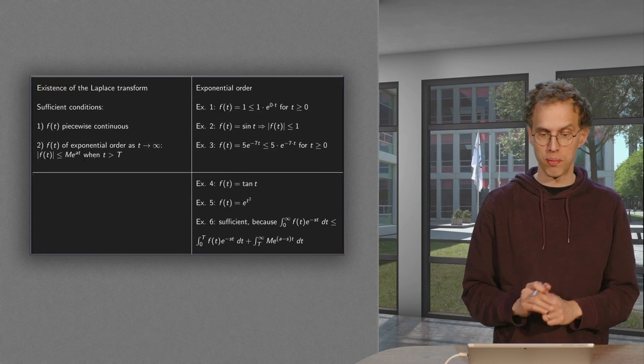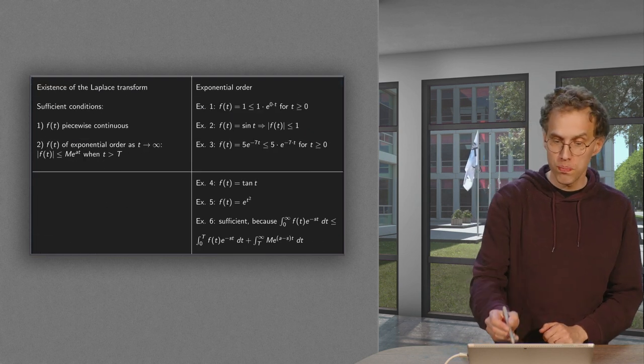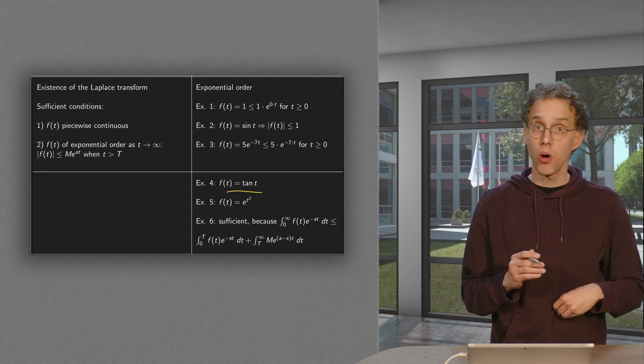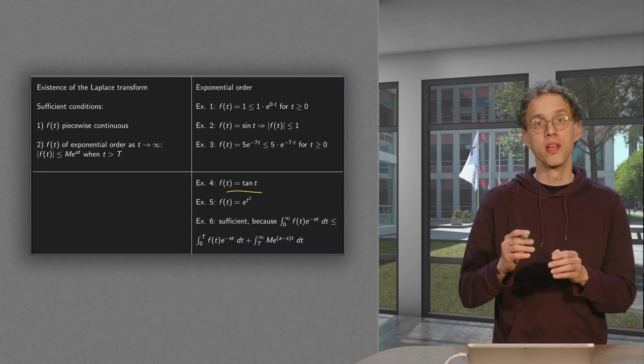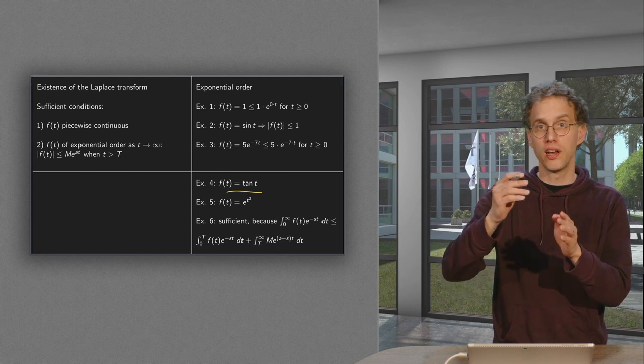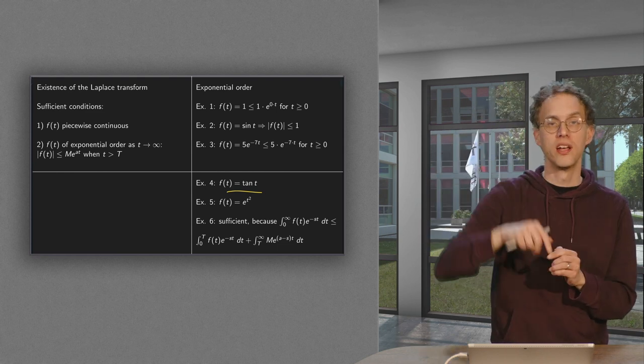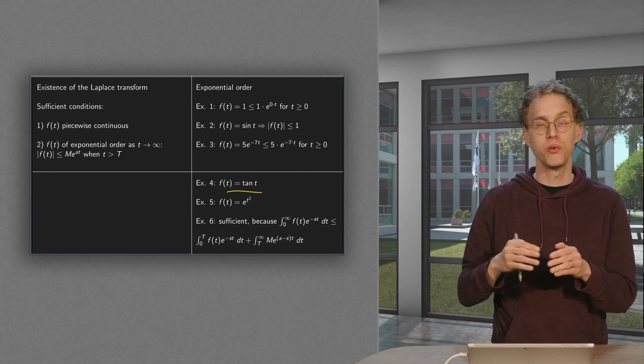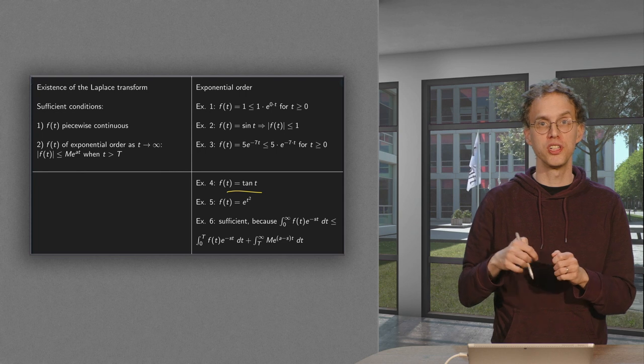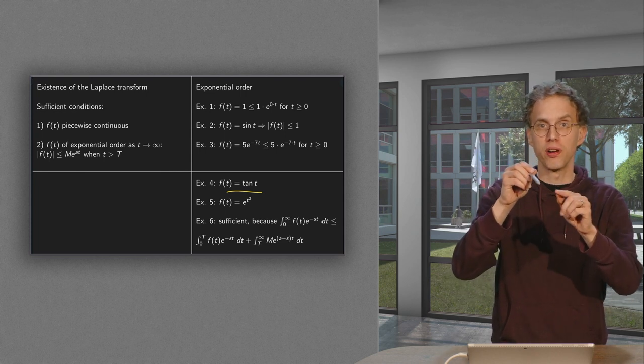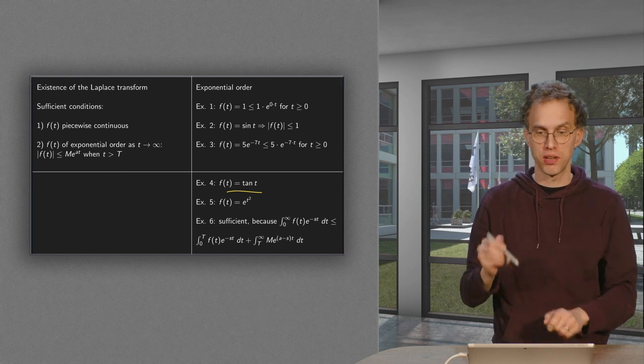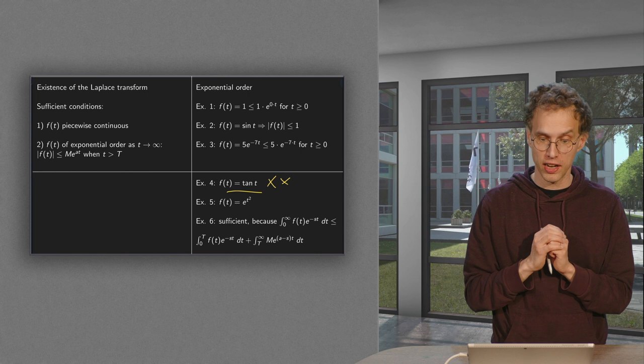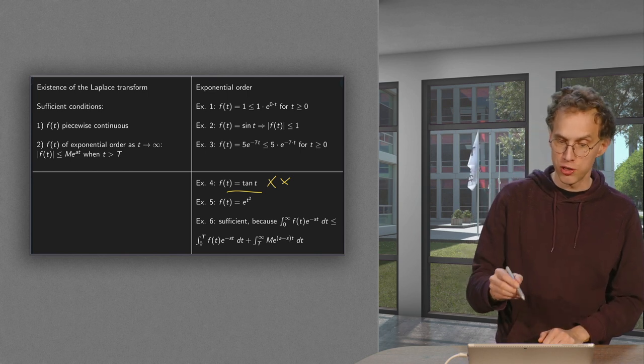Are there any problems? Well, if you pick, for example, the tangent of t. Okay, it has problems with asymptotes, but it's also not of exponential order. Because whatever you do, the tangent of t keeps having those vertical asymptotes. So no matter what you do, how big you make your exponential function, at a certain point, your tangent will go through your exponential function. So this one is not of exponential order. You will not be able to get it below an exponent.